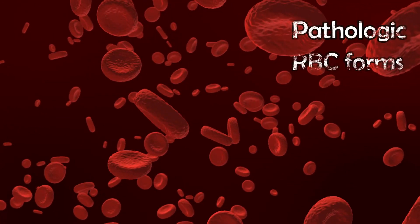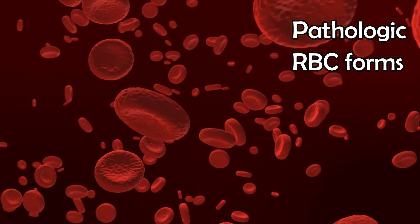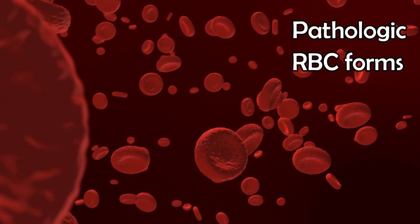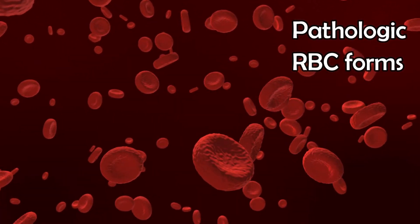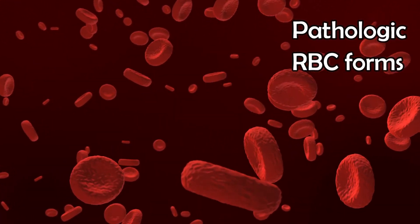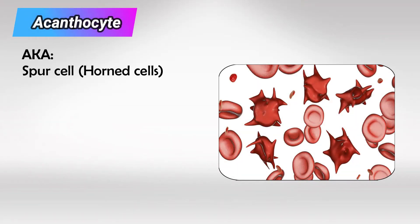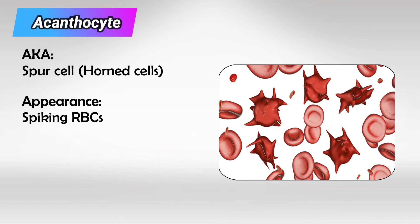Welcome back. In this video, we'll talk about the diseases that can change the shape of red blood cells. Starting with acanthocytes, commonly referred to as spur cells — 'acantho' is a Greek word meaning 'having a horn,' and so the red blood cells will appear to have many different spikes or horns.